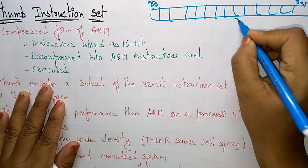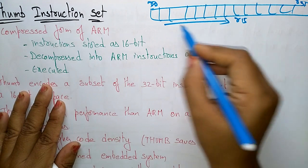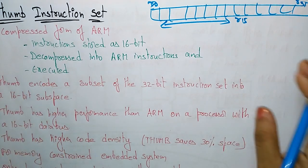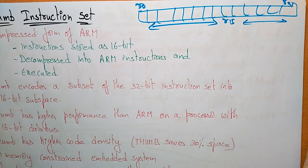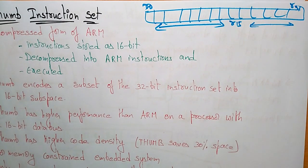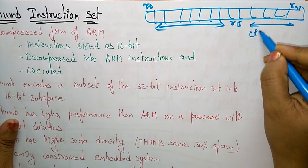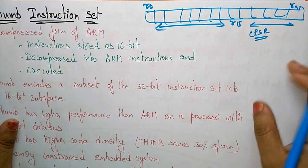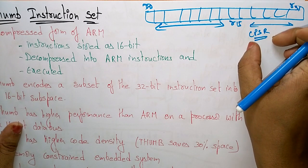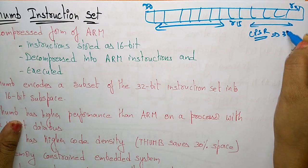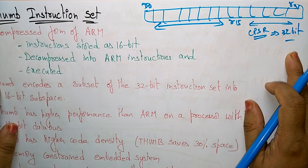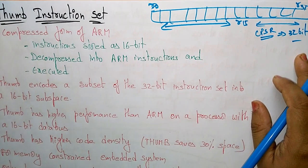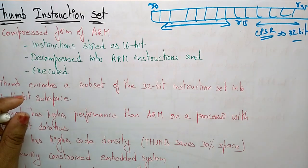Registers R0 to R15 are used for general purpose and the remaining are special status registers. The CPSR is one of those special registers. It is a 32-bit register, and with the help of the CPSR register, the processor indicates whether the Thumb instruction is enabled or disabled.